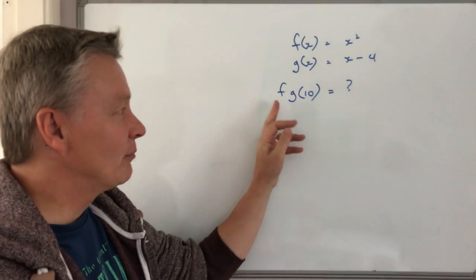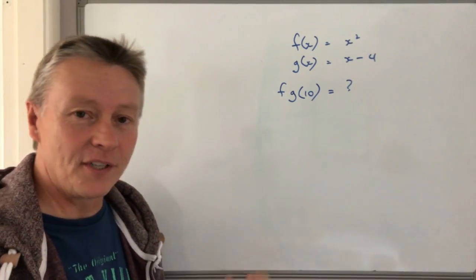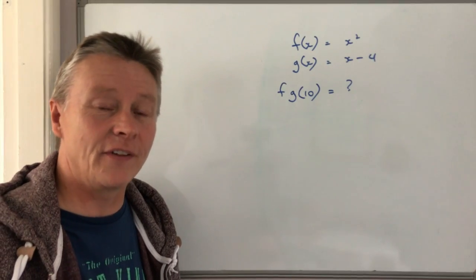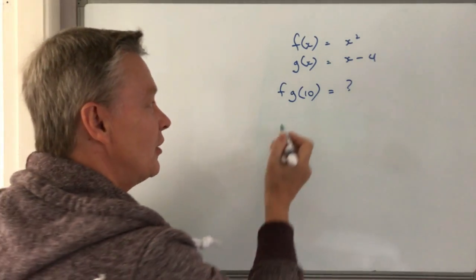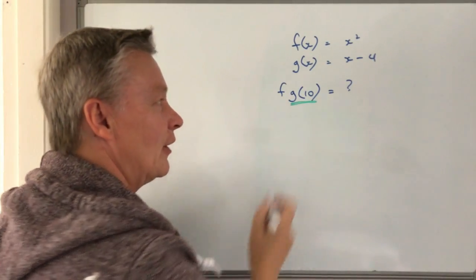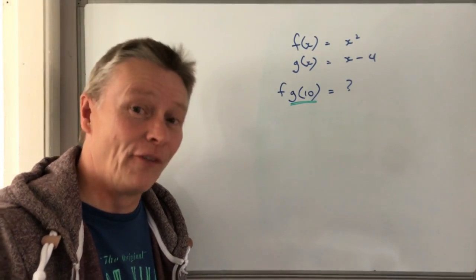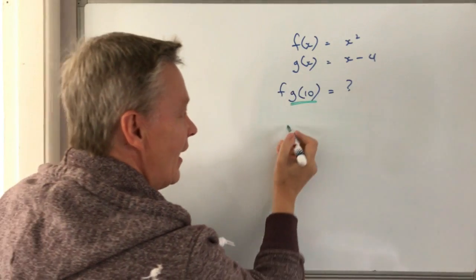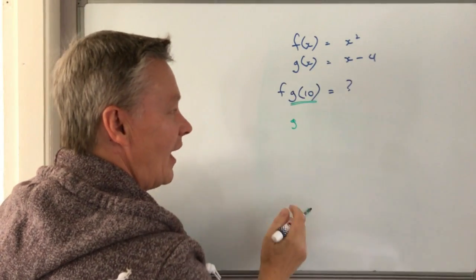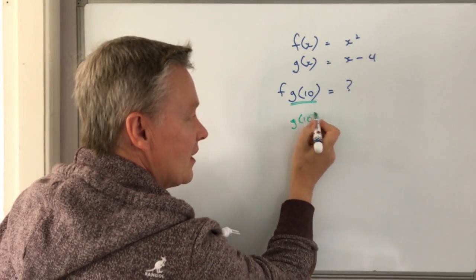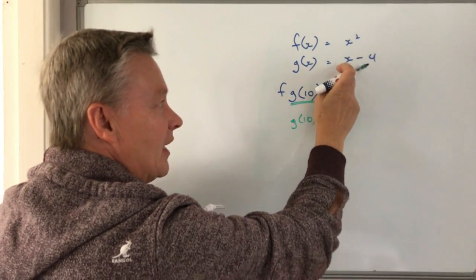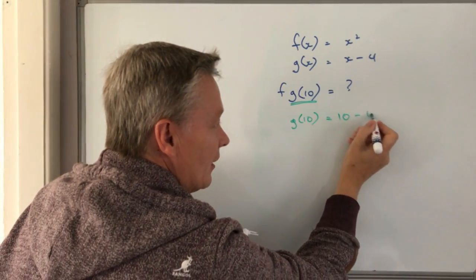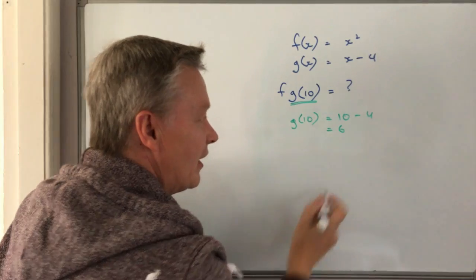Well the first thing I'm going to do is completely ignore the f because it's actually really important that the order of these things you look at very closely. So the g of 10 is the first bit I'm going to look at, and all I'm going to do is say well g of x at the moment is x minus 4, so the g of 10 is going to be 10 minus 4 which is going to be 6.